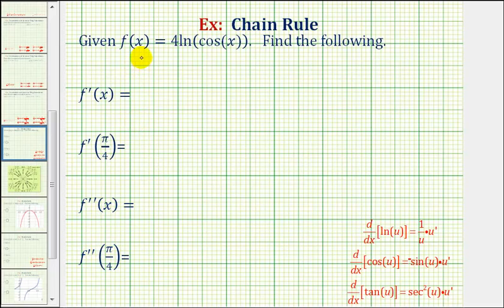The first thing we should notice about our function is that it's a composite function, where the outer function is a natural log function and the inner function is cosine x. And since we have a composite function, to find our first derivative, we will have to apply the chain rule.